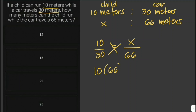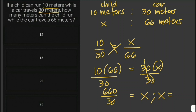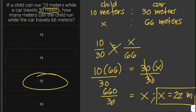So this is 10 times 66 equals 30 times x. Then we divide both sides by 30 to solve for x. So x is equal to 660 over 30, therefore x is equal to 22 meters. So this is our answer.